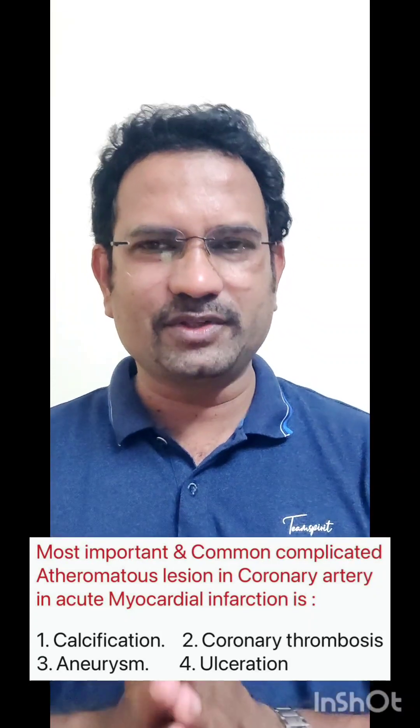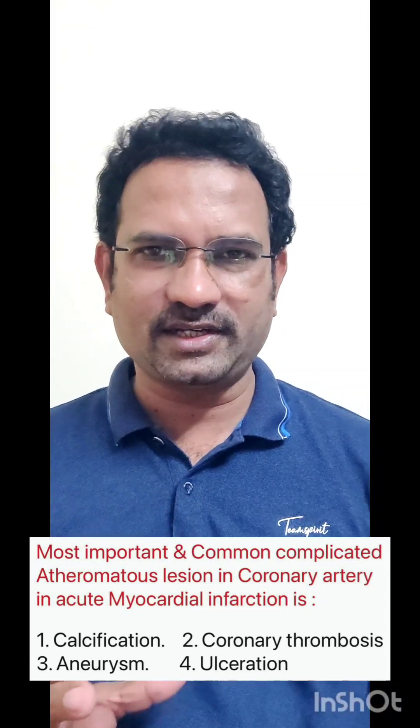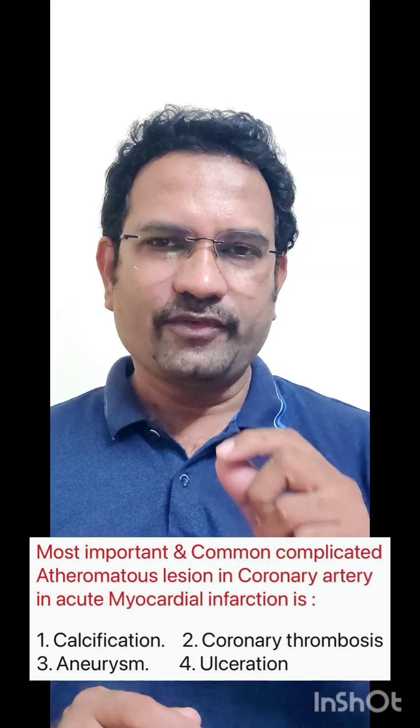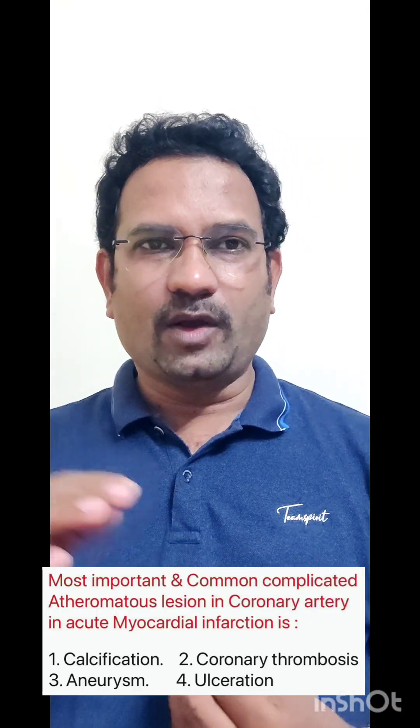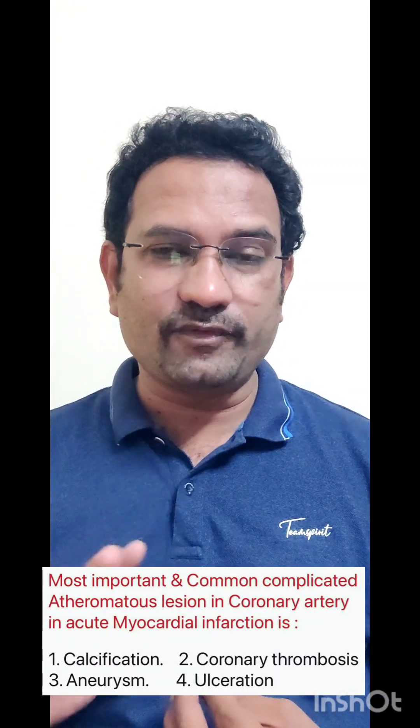Overall, the question is about the most common complicated atheromatous lesion. Atheroma is fatty accumulation in a blood vessel — specifically an atheromatous lesion in the coronary artery. Coronary arteries are the arteries which supply blood to the heart. The heart pumps blood and supplies it to every part of the body, and the heart's own blood supply comes from the coronary arteries.